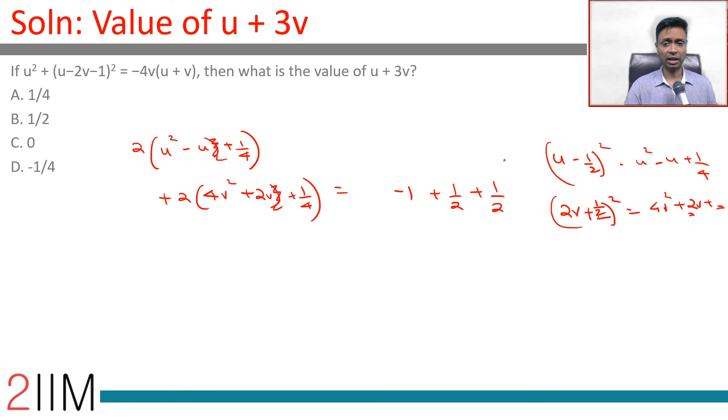I completely relish the fact that this boils down to 0. This is nothing but 2 times u minus half the whole square plus 2 times 2v plus half the whole square equal to 0. Something square plus something square is 0. A square cannot be negative. That means this is equal to 0, this is equal to 0, or u is half, v is minus 1 by 4.